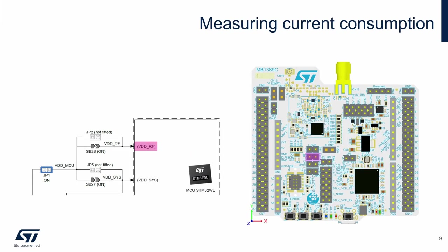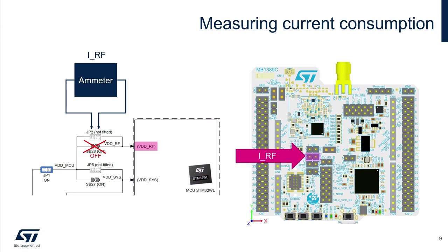On the Nucleo board we can measure power consumption of RF stage labeled as VDD-RF. The solder bridge SB28 is closed by default. It must be opened. Then we can connect the ammeter to JP2. This current is labeled as IRF. Position of JP2 on the board is here.